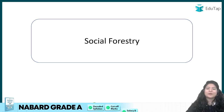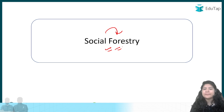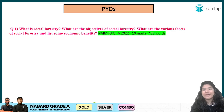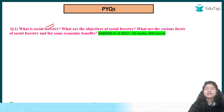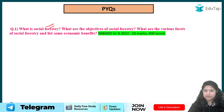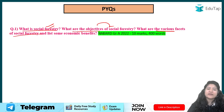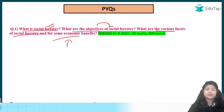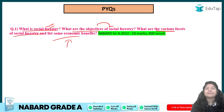Hi everybody, welcome to Edu Tab and also welcome to the ARD Simplified Series. The topic we've picked up today is Social Forestry, part of your forestry chapter. We've picked this topic because a descriptive answer writing question was directly asked from this topic in one of the previous year question papers — what is social forestry, what are the different objectives, what are the various facets and some economic benefits.